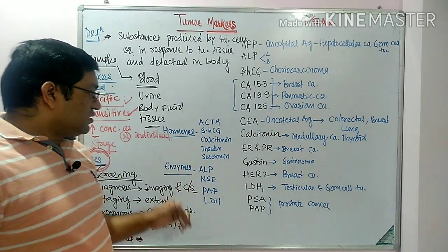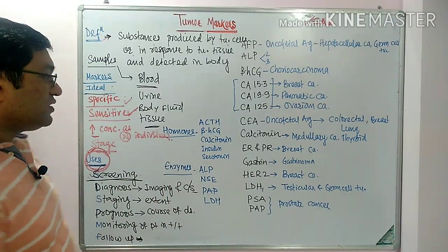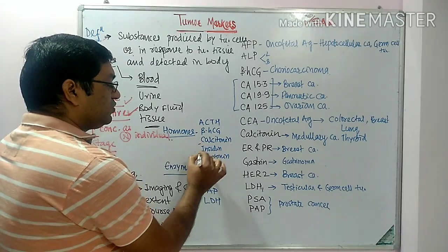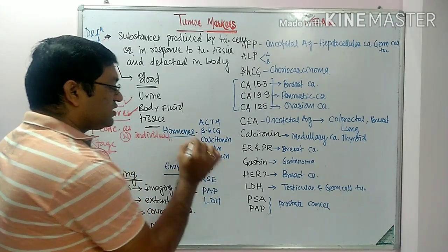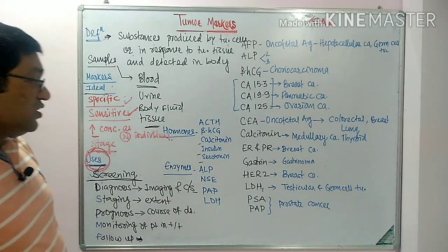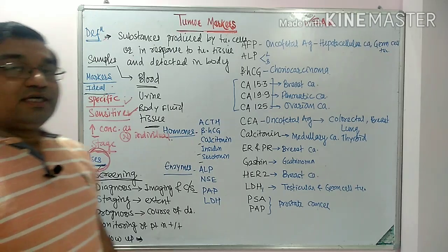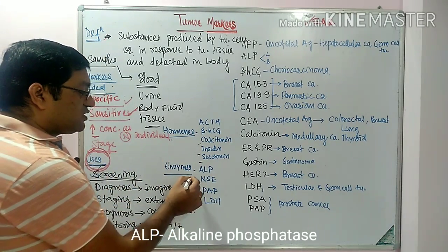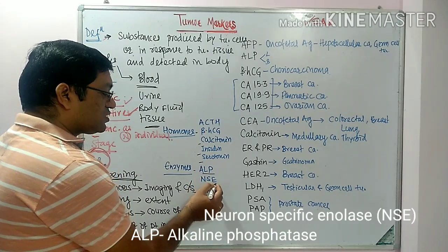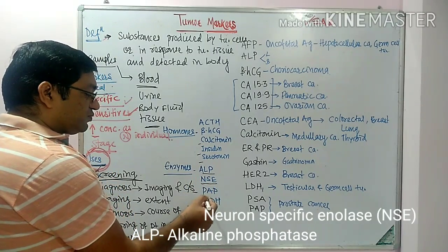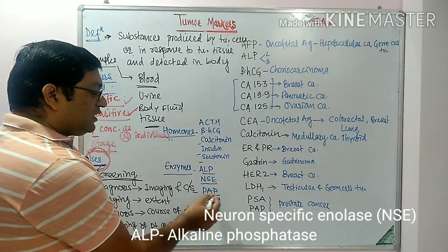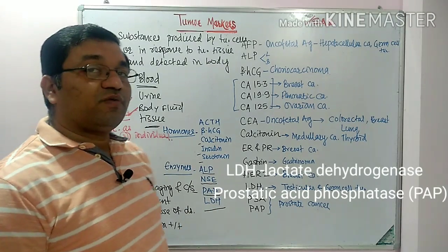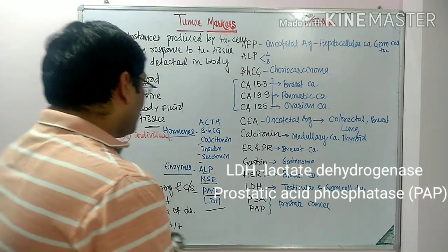Examples of enzymes useful in cancer detection include alkaline phosphatase, neuron-specific enolase, prostatic acid phosphatase, and LDH. We will now discuss each one by one. They are classified into: oncofetal antigen, carbohydrate antigen or cancer antigen, hormones, enzymes, and various other markers including receptors and molecular markers.